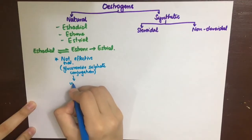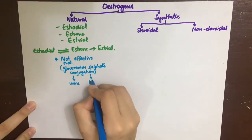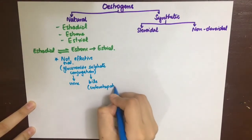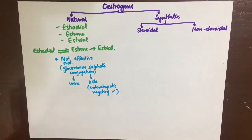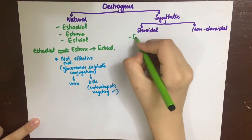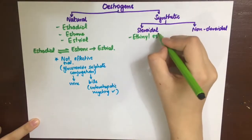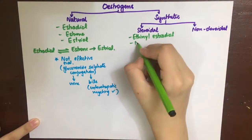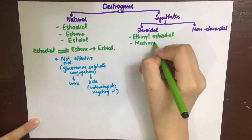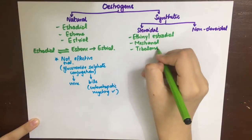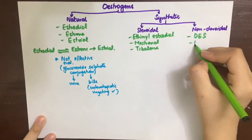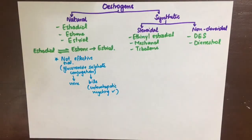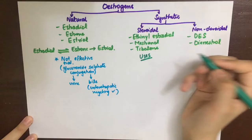In the intestine, naturally occurring estrogens can be degraded by bacterial flora and then undergo enterohepatic recycling. The synthetic forms of estrogen include steroidal forms — ethinyl estradiol, mestranol, and tibolone — while the non-steroidal forms are diethylstilbestrol and dienestrol.